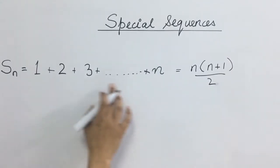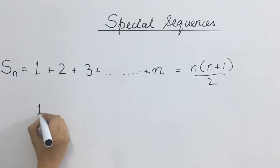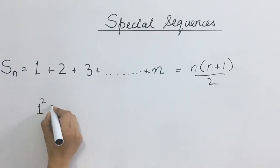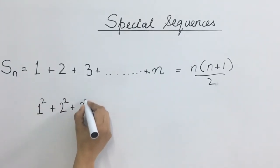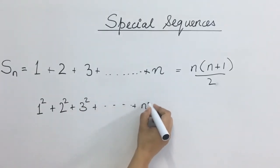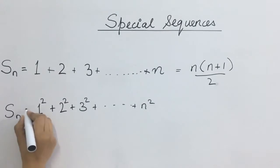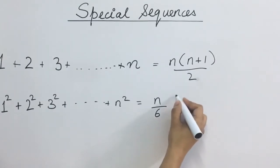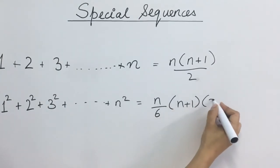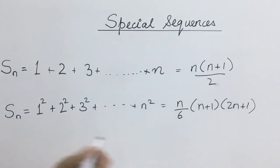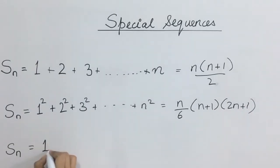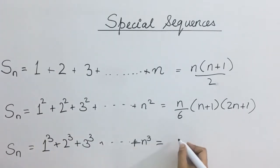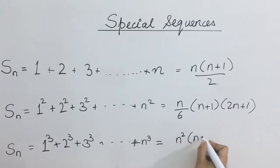Similar to this, yadi ham in sabhi natural numbers ka square kar dete hain — 1 square, 2 square, 3 square, up till n square — toh iska jo sum hoga, this will be equal to n upon 6, into n plus 1 and 2n plus 1. Third case hai, if we take the cube of all these numbers, equal to n square into n plus 1 whole square upon 4.